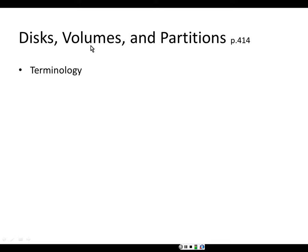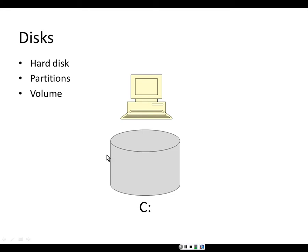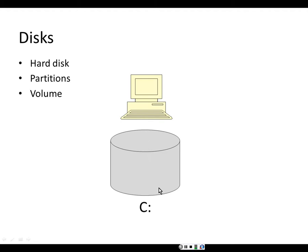Let's talk about terminology. What's the difference between a disk, a volume, and a partition? A disk is a mechanical device. A partition can occupy part of a disk or all of a disk. A disk can be divided into two separate partitions — for example, saving all program files on the C drive and all data files on the D drive, then backing up the D drive every day.